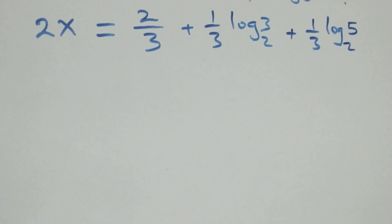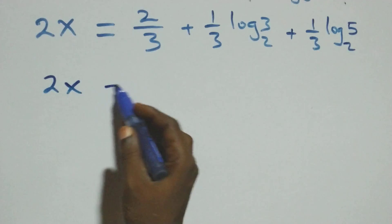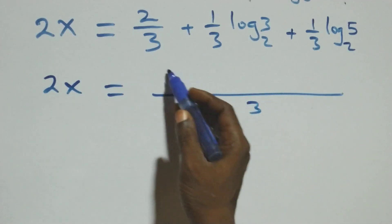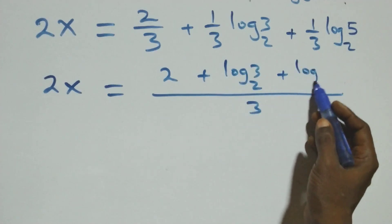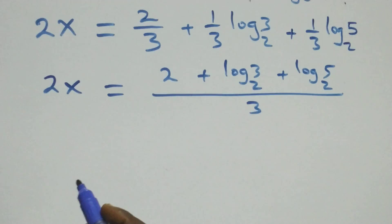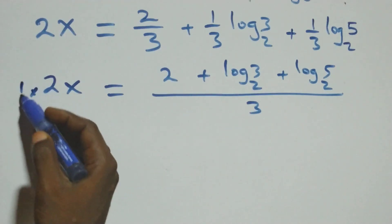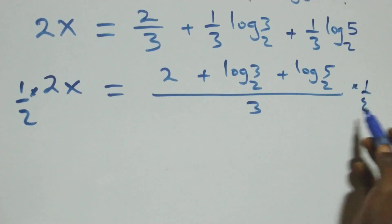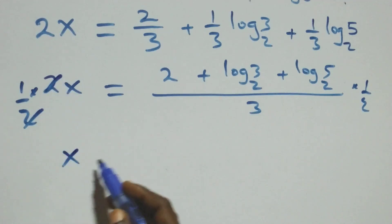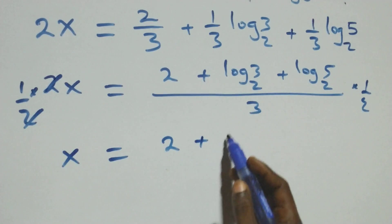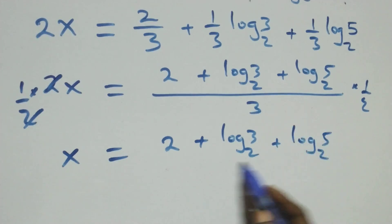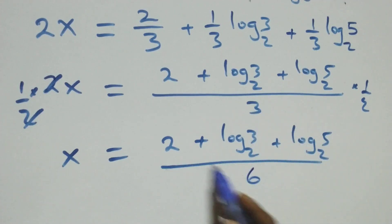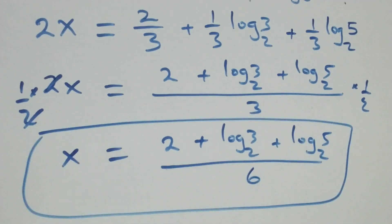What we have here becomes 2x equals 2 over 3 plus 1 over 3 times log 3 base 2, plus 1 over 3 times log 5 base 2. Multiplying both sides by 1 over 2, the 2 cancels, and we have x equals 2 plus log 3 base 2 plus log 5 base 2, all over 6.